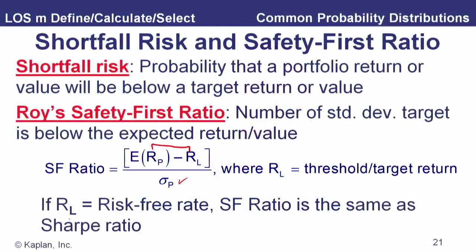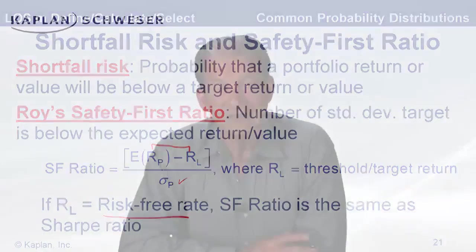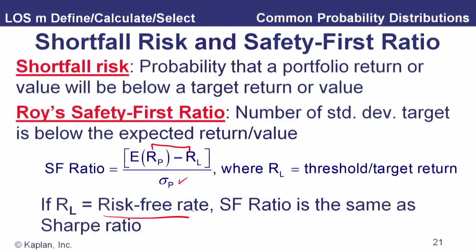If the safety first ratio comes out to be three, then the target return is three standard deviations below the mean. And if that threshold were the risk-free rate, that gets us right back to what we studied as the Sharpe ratio — excess returns per unit of risk. So if that target return is the risk-free rate, the safety first ratio is also the Sharpe ratio.